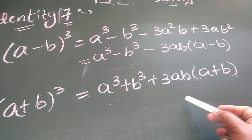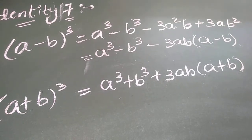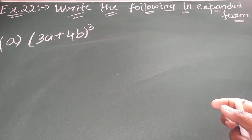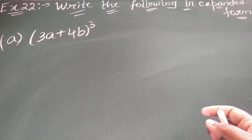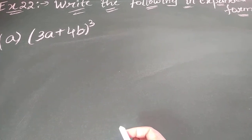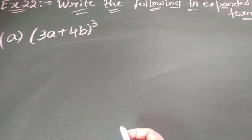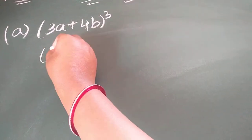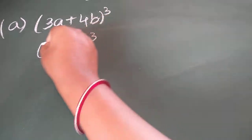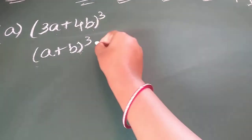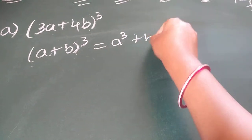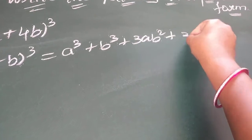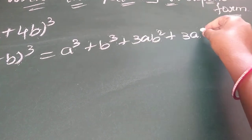These are the two identities. Now we are going to solve sums based on these. Example 22: write the following in expanded form. For the first question, 3a plus 4b whole cube, observe that it matches the identity a plus b whole cube where a equals 3a and b equals 4b. The identity a plus b whole cube equals a cube plus b cube plus 3a square b plus 3ab square.